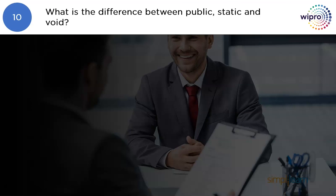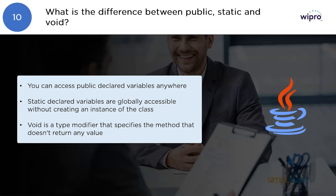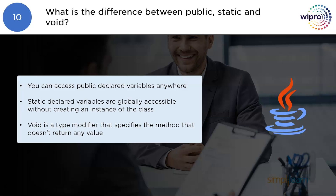What is the difference between public, static, and void? Public declared variables can be accessed anywhere. Static declared variables are globally accessible without creating an instance of the class. Void is a type modifier that specifies that the method does not return any value.